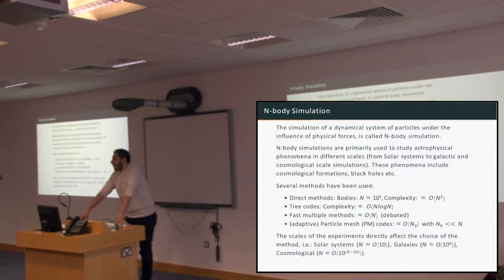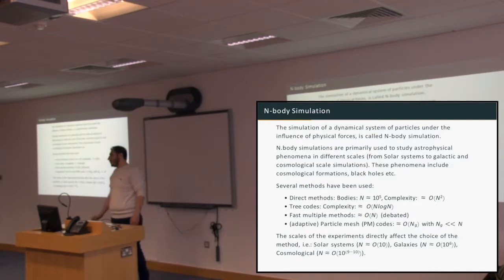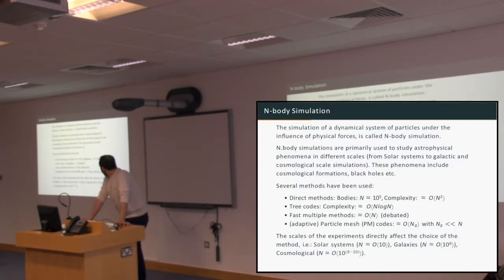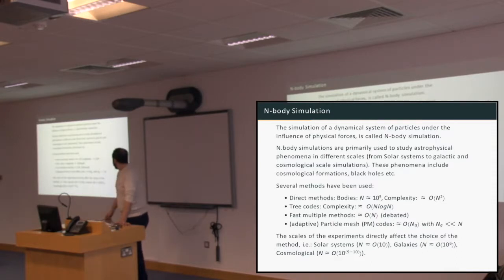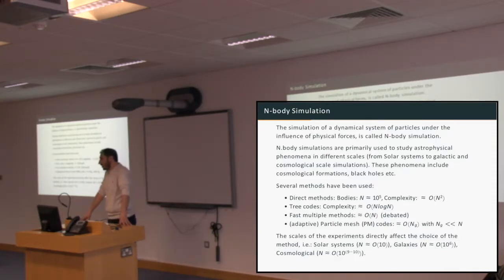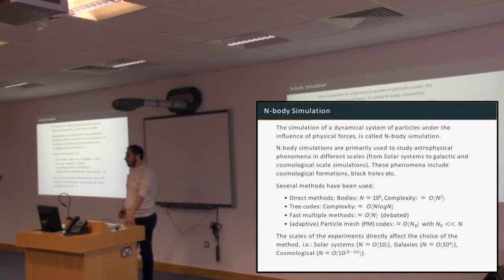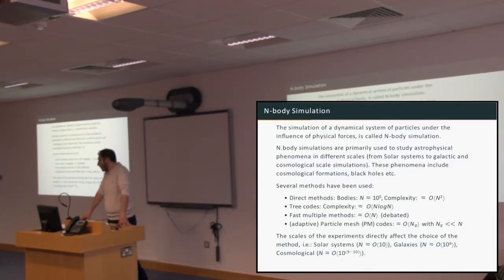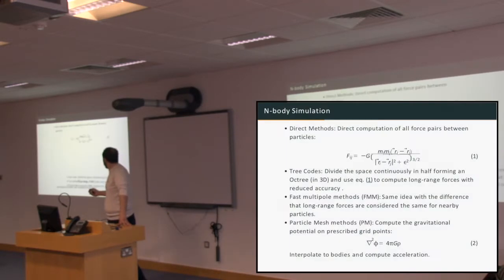The choice of method depends highly on what you want to simulate. Solar systems have tens of bodies, so you don't have to use tree codes, fast multipole methods, or particle-mesh methods — you can use direct methods. Galaxies have bodies on the order of 10^6. Final cosmological simulations, which study the evolution of the universe, are close to 10^10 number of bodies.